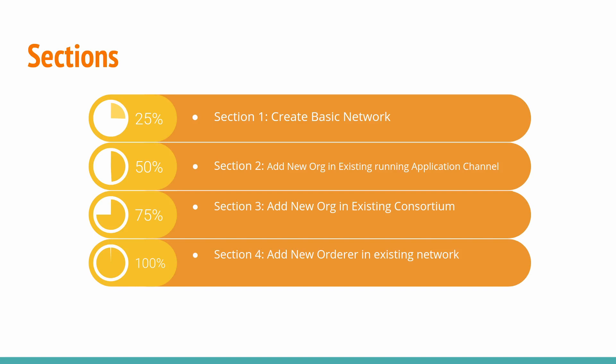In Section 3 we will cover how to update the consortium. When we talk about the consortium, all the consortium information is available in the system channel. In Section 2 we added the organization in the application channel, but what if this organization wants to create a new channel? This organization will not be able to create a new channel because this third organization is not a part of the consortium, which is the system channel.